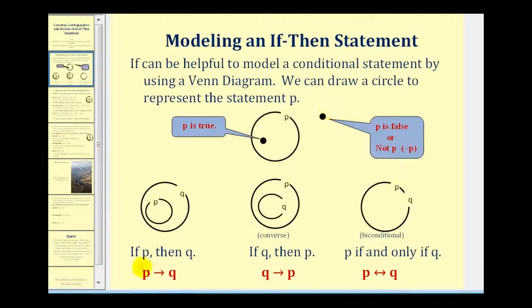So for the conditional if P then Q, the Venn diagram would have set P inside set Q, guaranteeing that if P is true, Q would also be true.